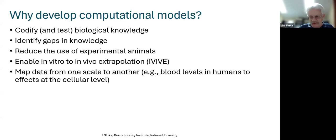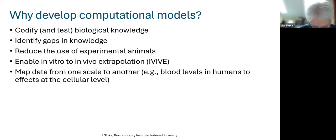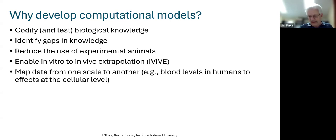Computational models are also useful for mapping data from one scale to another. In the biomedical domain, you often only have data at a very crude scale — blood concentrations, a single image from a scanning study — and you would like to map that data into data at some other scale within the model.